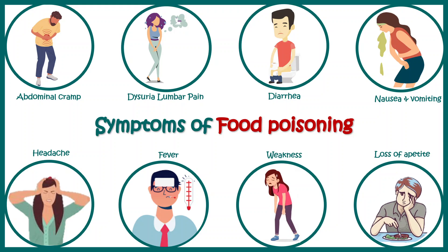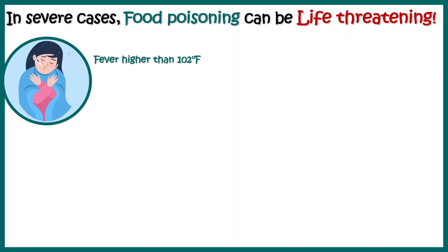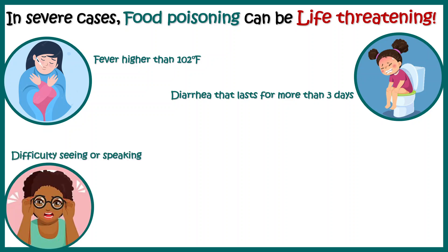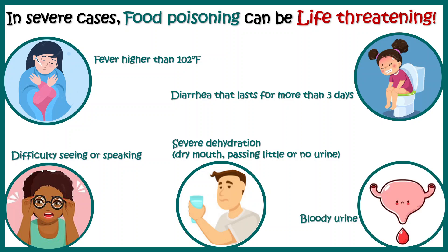In extreme cases of food poisoning, there could be fever higher than 102 degrees Fahrenheit, diarrhea lasting longer than 3 days, difficulty in seeing or speaking, severe dehydration, and bloody urine.